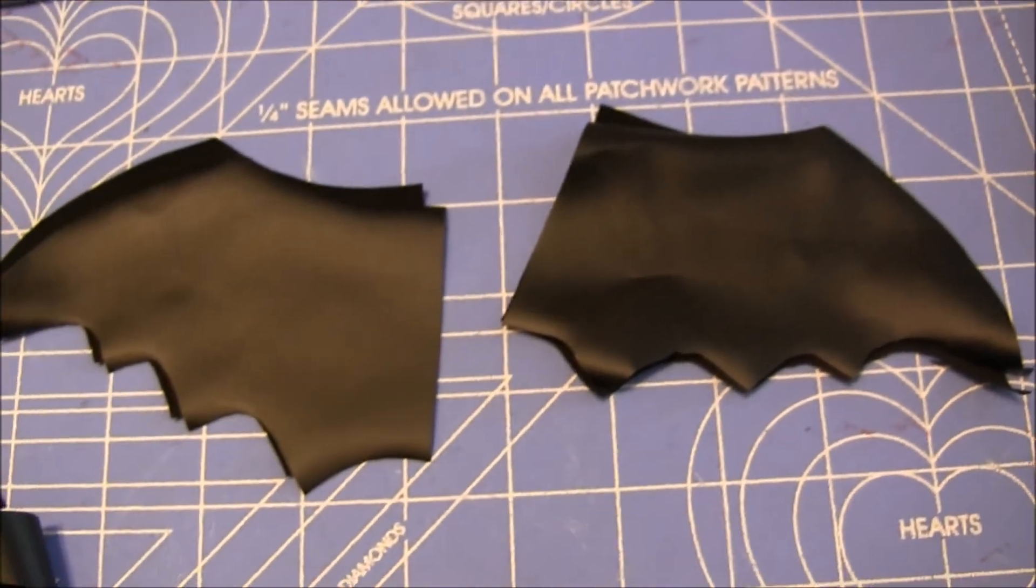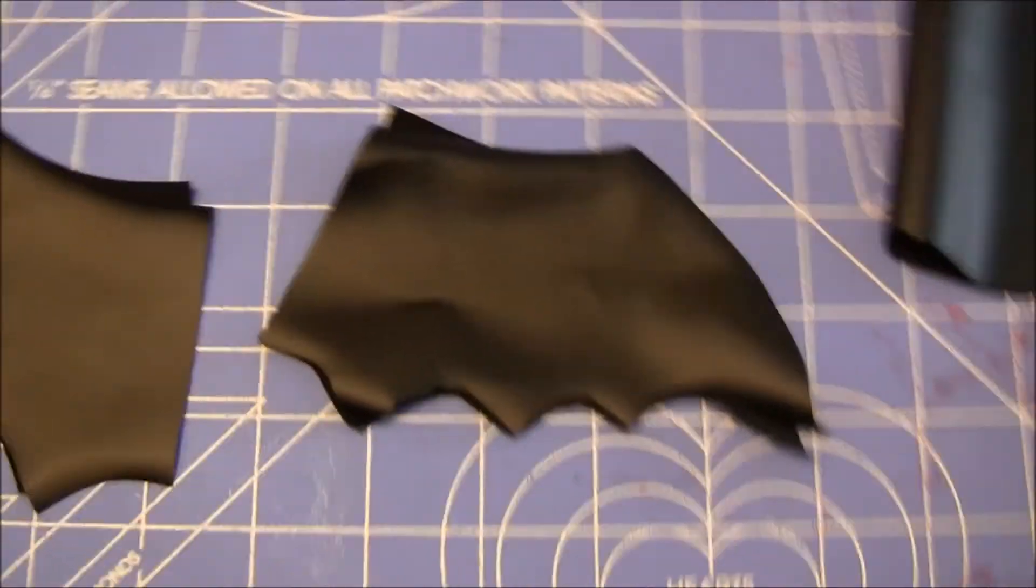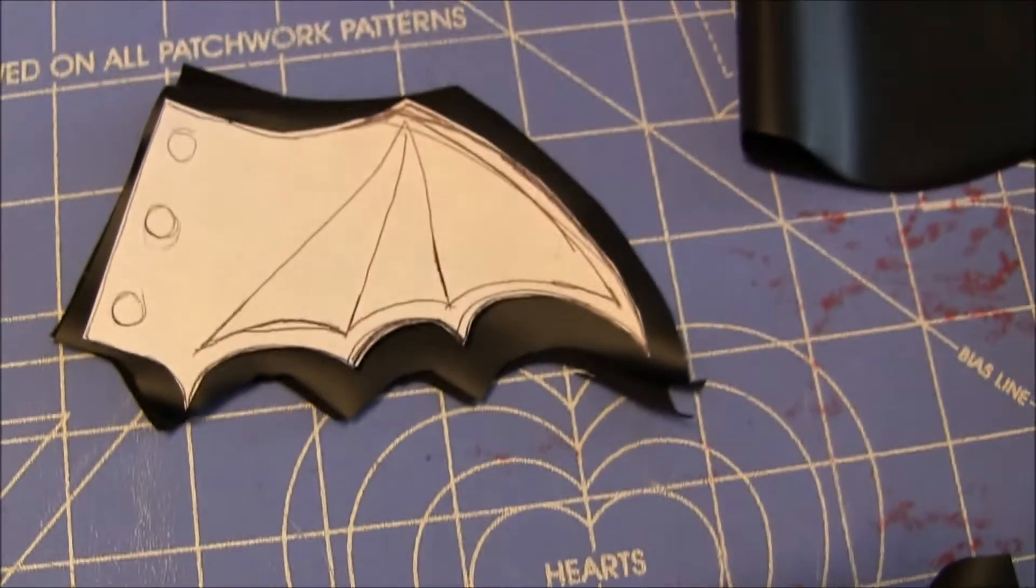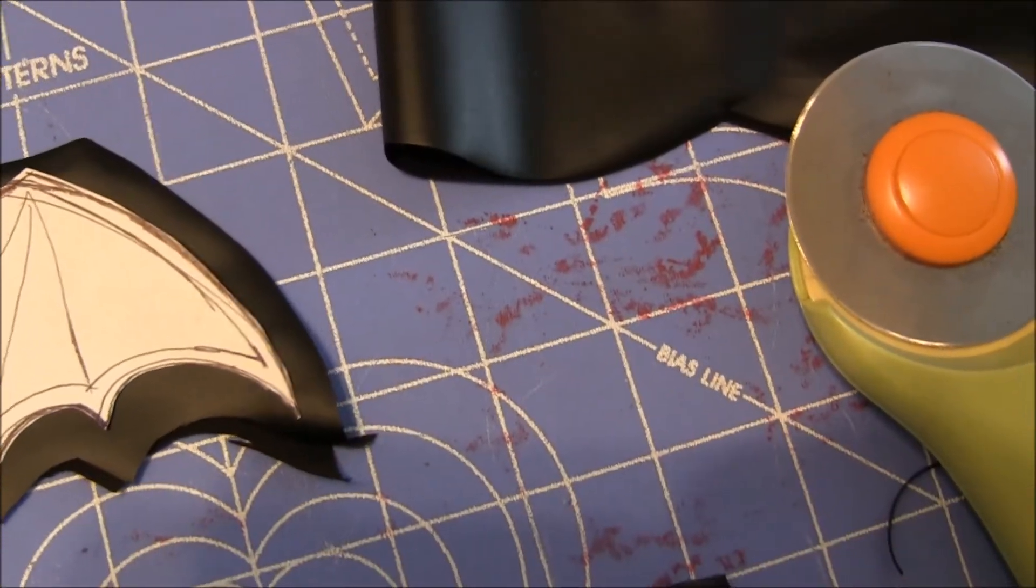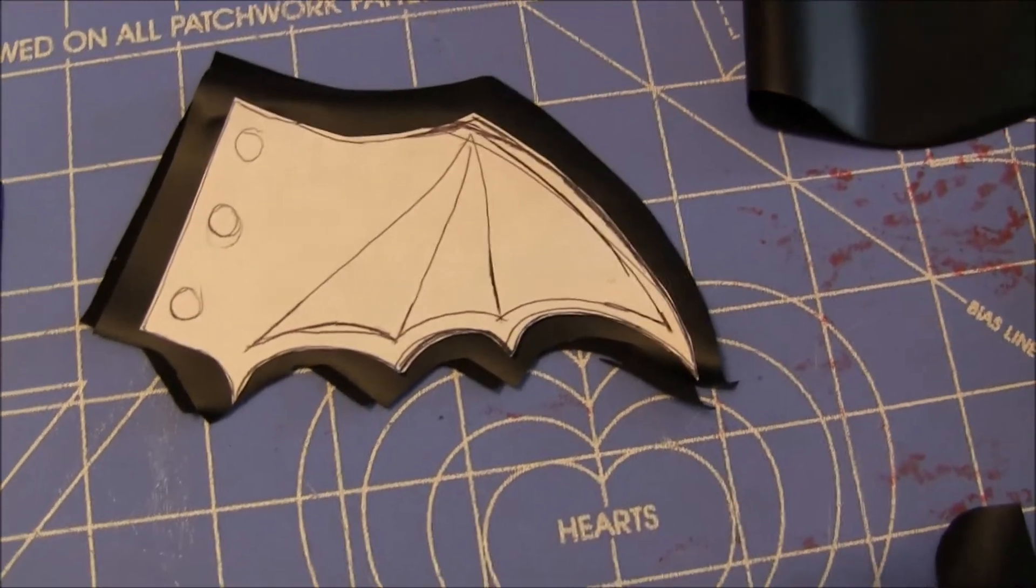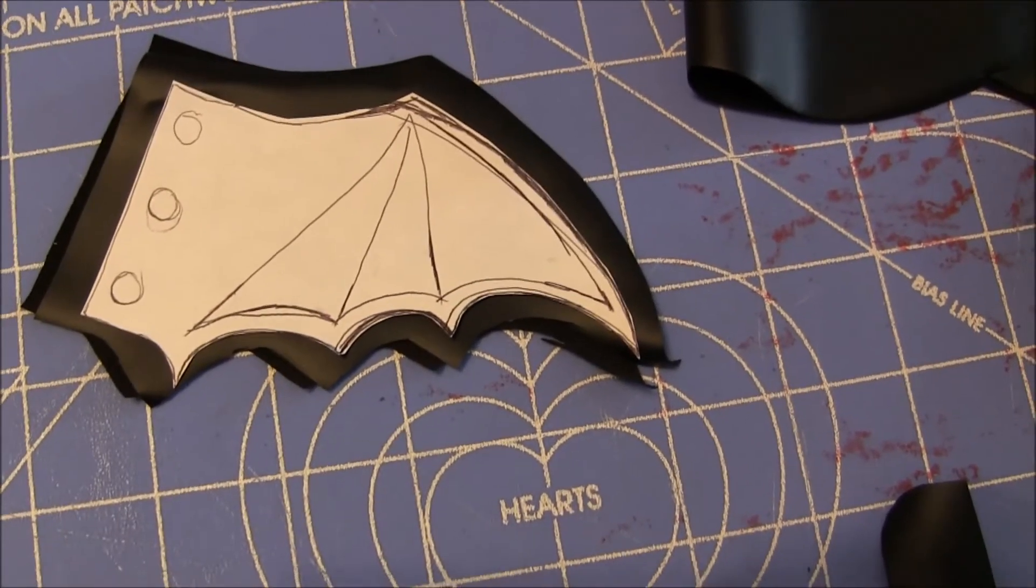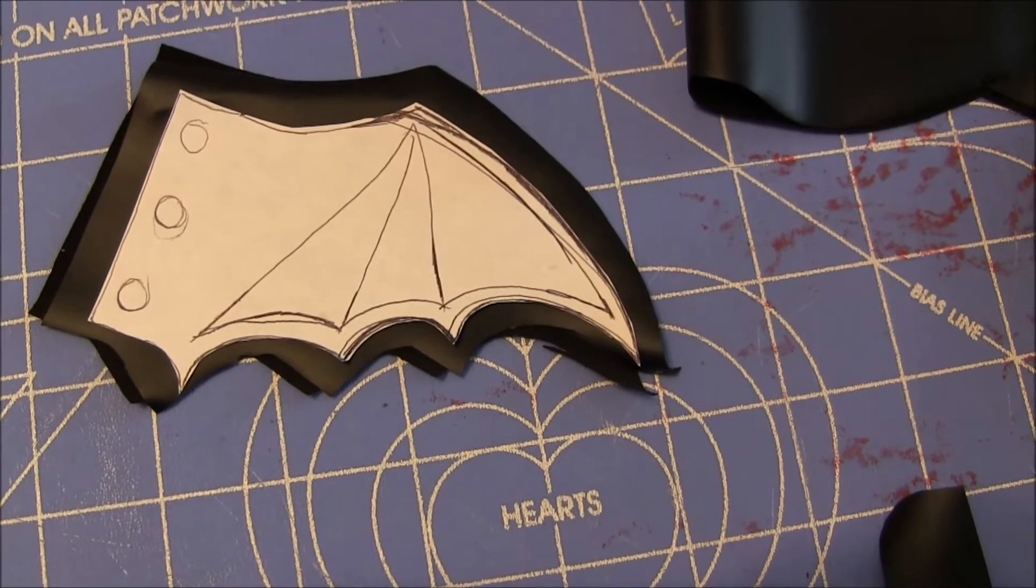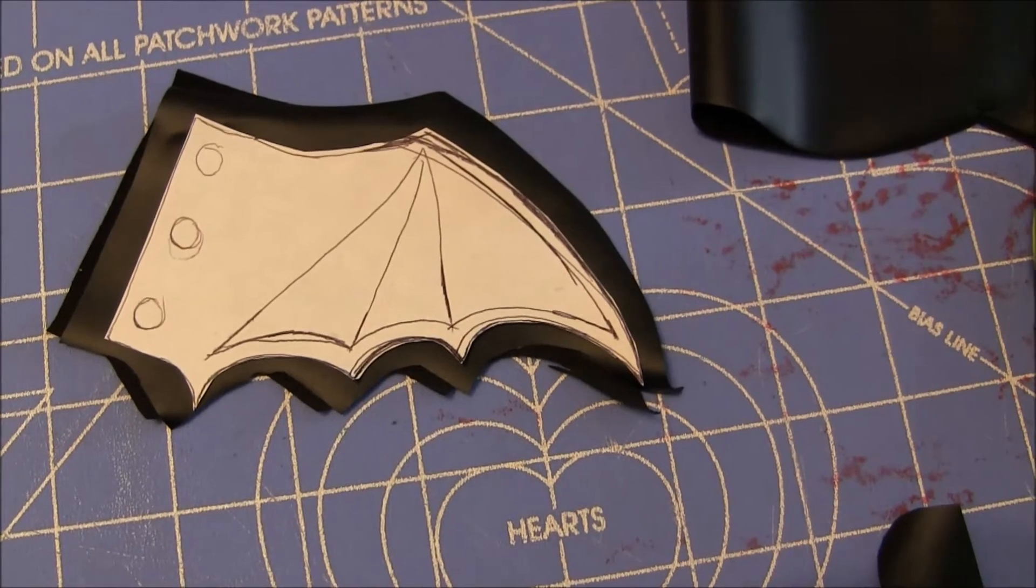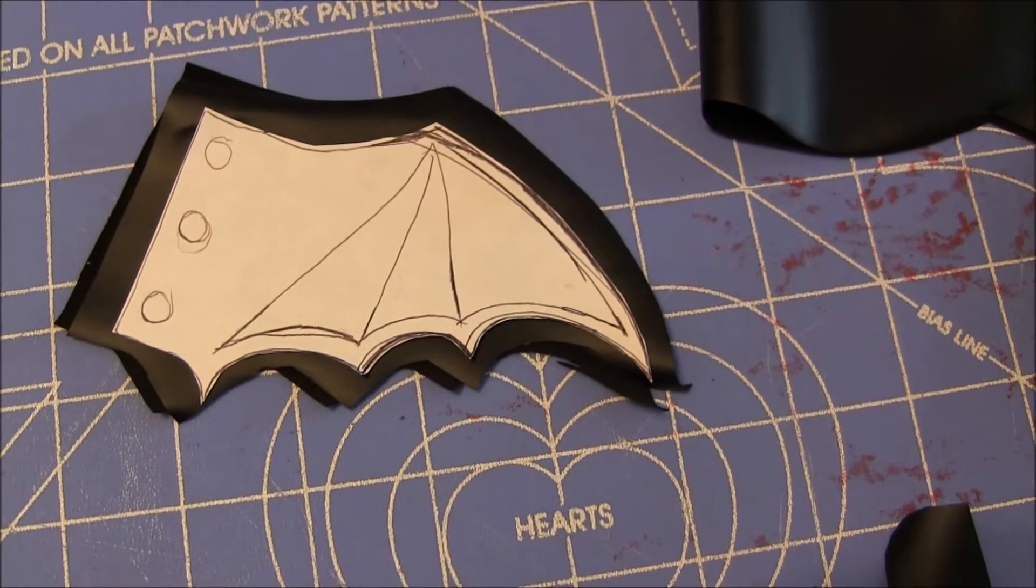Here we have the pattern pieces cut out, and you can tell that's larger than the pattern piece was. The hardest part of this project is probably cutting out the pattern pieces. The fabric will want to curl a little bit. I did figure out this fabric is two-way stretch - it stretches one way but doesn't stretch the other, but that isn't a big deal.